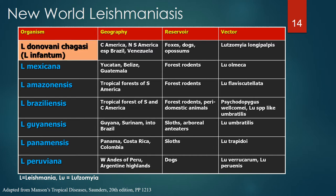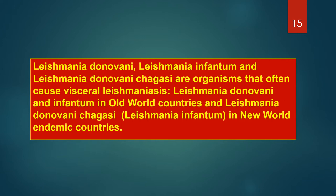The literature can be confusing regarding organism classification names. Leishmania donovani shigasi is considered the same organism as Leishmania infantum in many texts. A main point is that Leishmania donovani, Leishmania infantum, and Leishmania donovani shigasi are organisms that often cause visceral leishmaniasis — Leishmania donovani infantum in Old World countries and Leishmania donovani shigasi, also known as Leishmania infantum, in New World endemic countries.